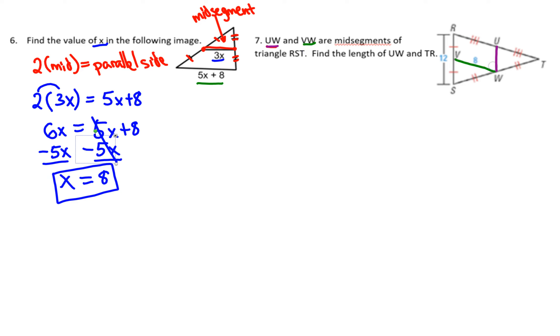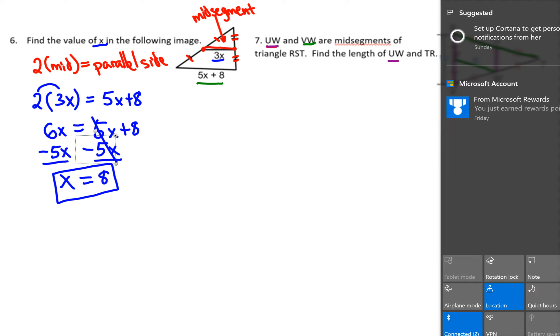These are our mid-segments, so each one is half the length of its parallel side. The problem wants us to find the length of UW and the length of TR.